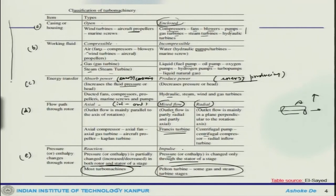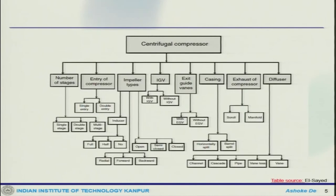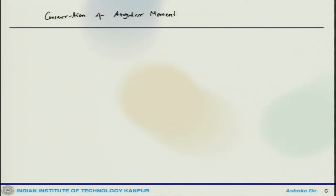One can see from this classification table that turbo machines can be distinguished into different broad categories depending on what parameter you consider. We will be talking particularly about the centrifugal compressor, axial compressor, and the turbine.